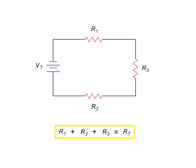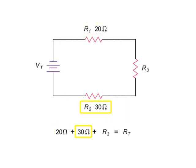So, if R1 has a resistance of 20 ohms, R2 a resistance of 30 ohms, and R3 a resistance of 10 ohms, the total resistance of the circuit is 60 ohms.